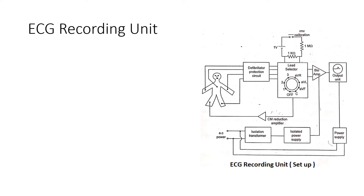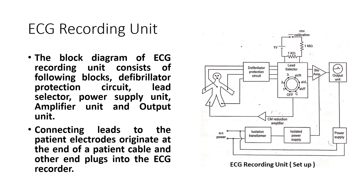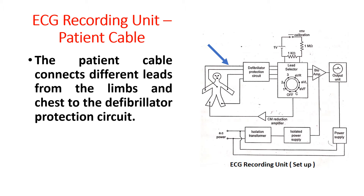ECG recording unit. The block diagram of ECG recording unit consists of the following blocks: the defibrillator protection circuit, lead selector, power supply unit, amplifier unit, and output unit. Connecting leads to the patient — electrodes originate at the end of a patient cable and the other end plugs into the ECG recorder. The patient cable connects different leads from the limbs and chest to the defibrillator protection circuit.